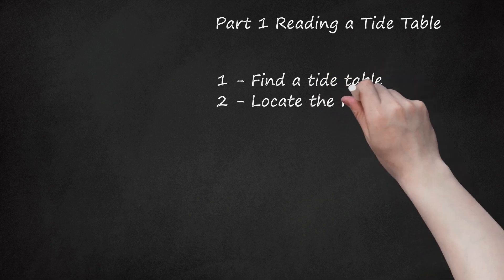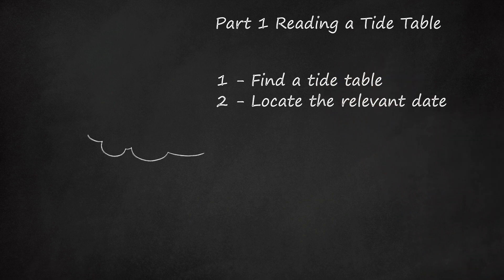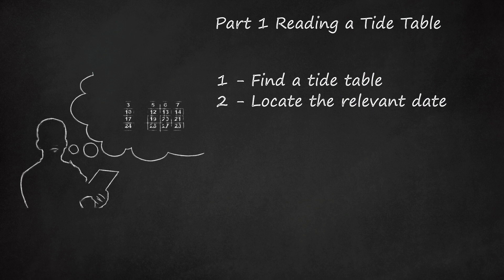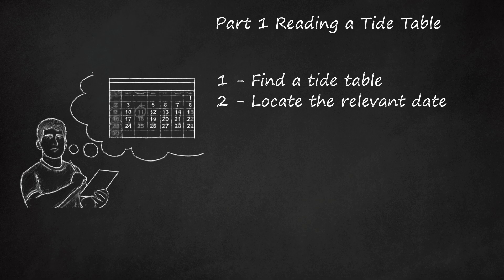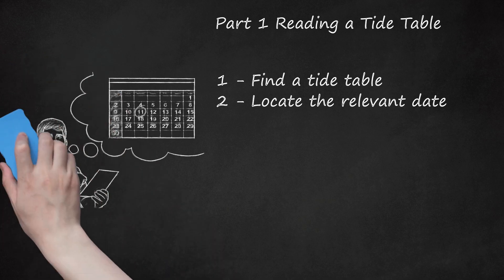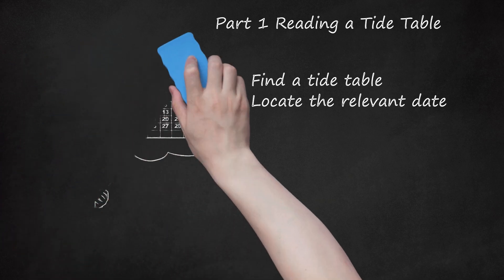Step 2: Locate the Relevant Date. Tide information may be printed for a week or more in advance. If you are planning an outing for tomorrow, use tomorrow's date. If your plans are flexible, look instead for the data that is most important to you, such as finding a low tide at a convenient time. This may mean waiting several days for the best opportunity. Remember that high and low tide times will be different every day, so do not make plans for the future based on a chart for the present.